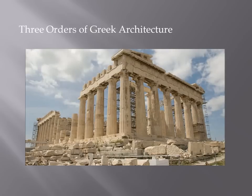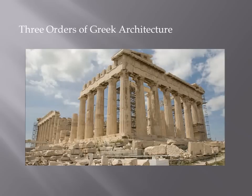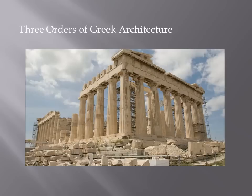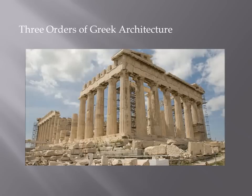We're going to look at the three distinct orders of classical ancient Greek architecture. The names of those three orders are the Doric, the Ionic, and then later the Corinthian. Those three orders were developed in ancient Greece, but were later adopted by the Romans, which occurred in about the first century BC. And these three Greek classical orders have consistently since then been used in neoclassical European architecture.